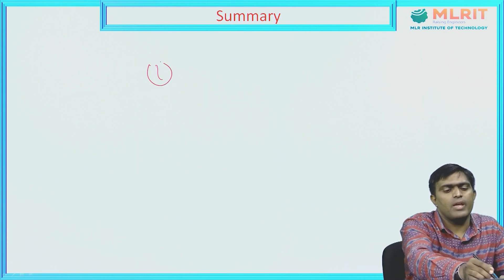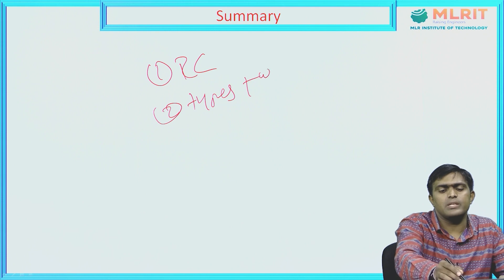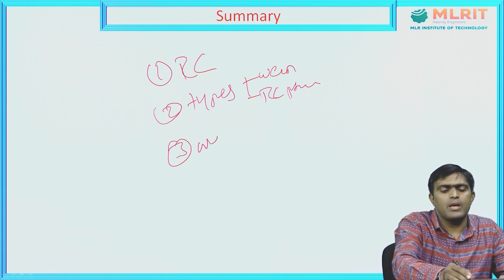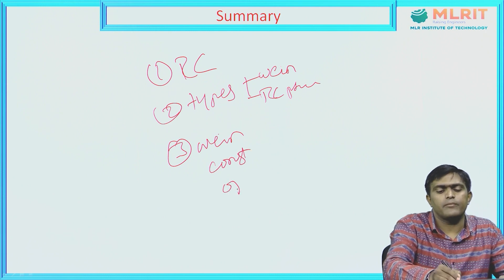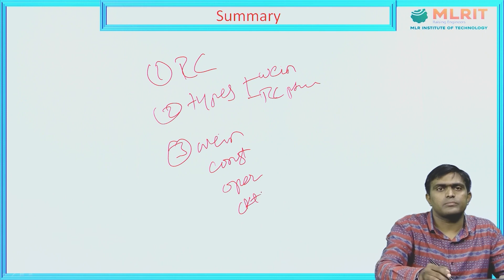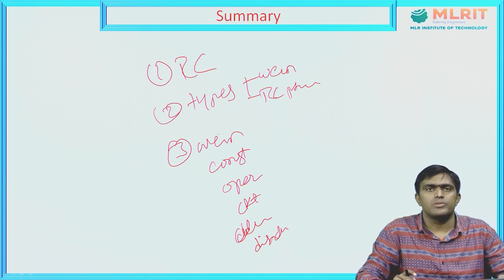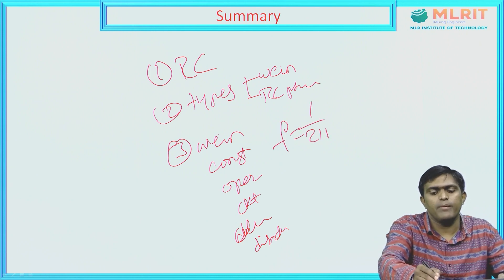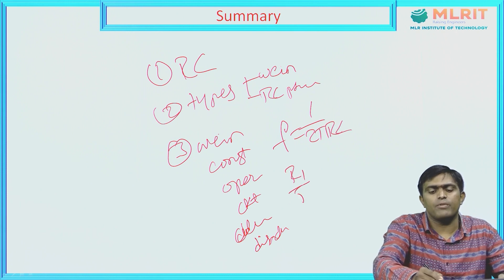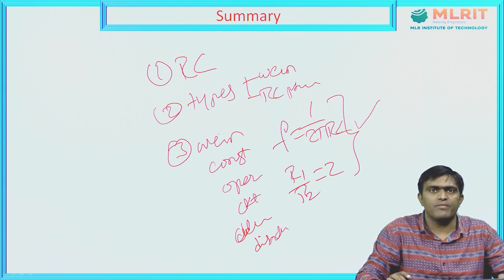Today's summary: we have seen what do you mean by an oscillator and the types of oscillators. In the next video, we will see the frequency derivation. We have already derived f = 1/(2πRC) and the condition that R1/R2 = 2. In the next video lecture, we will see the derivation of the frequency expression and the condition R1/R2 = 2.